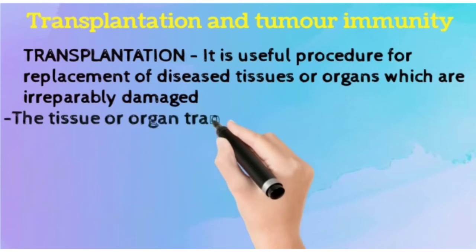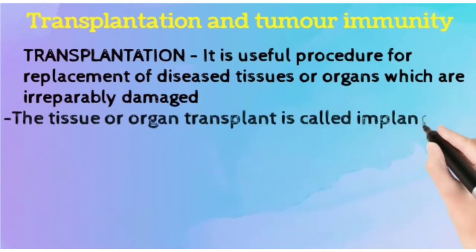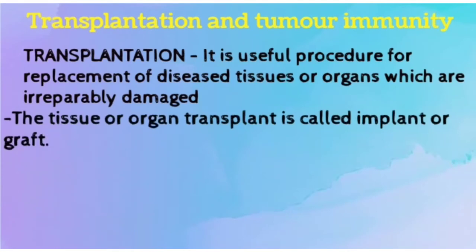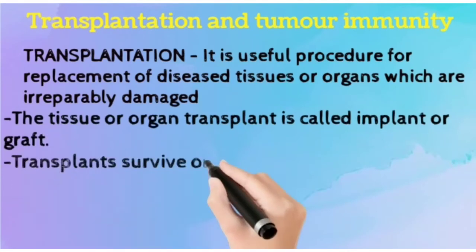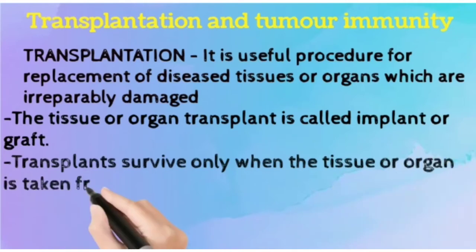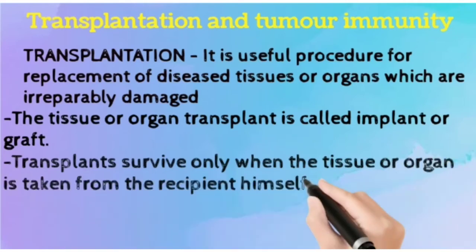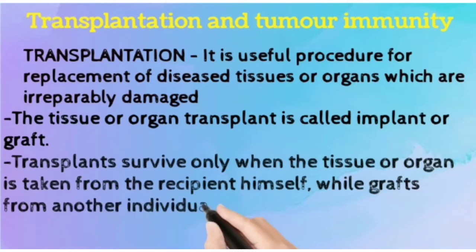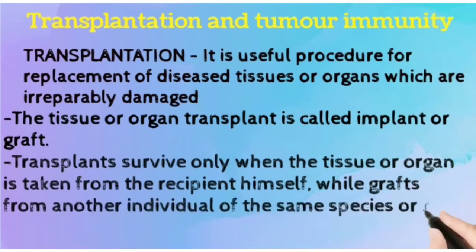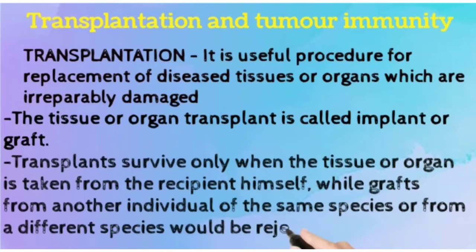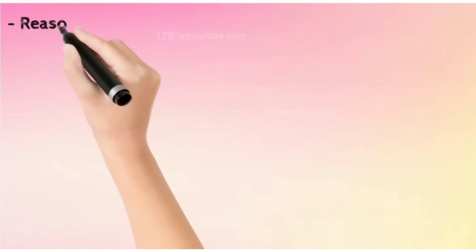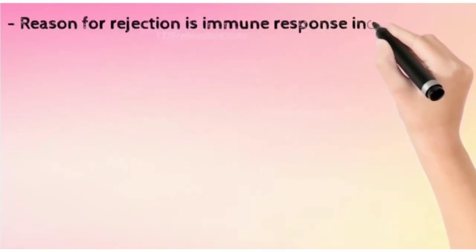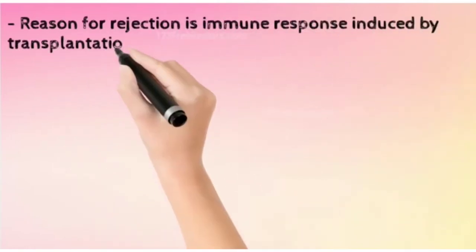Transplants survive only when the tissue or organ is taken from the recipient himself. Grafts from any other individual of the same species or from a different species would be rejected. The reason behind this rejection is the immune response induced by the transplantation antigens, and that immune response is the reason for the rejection.